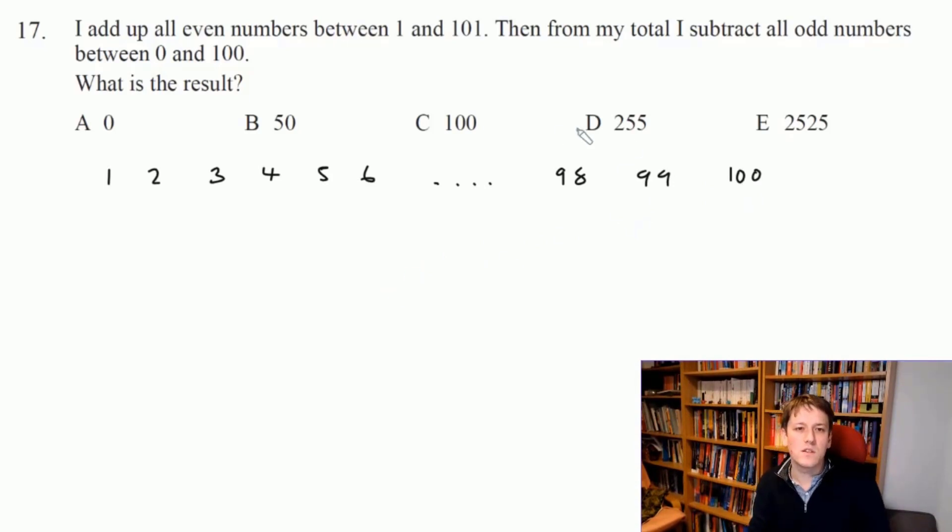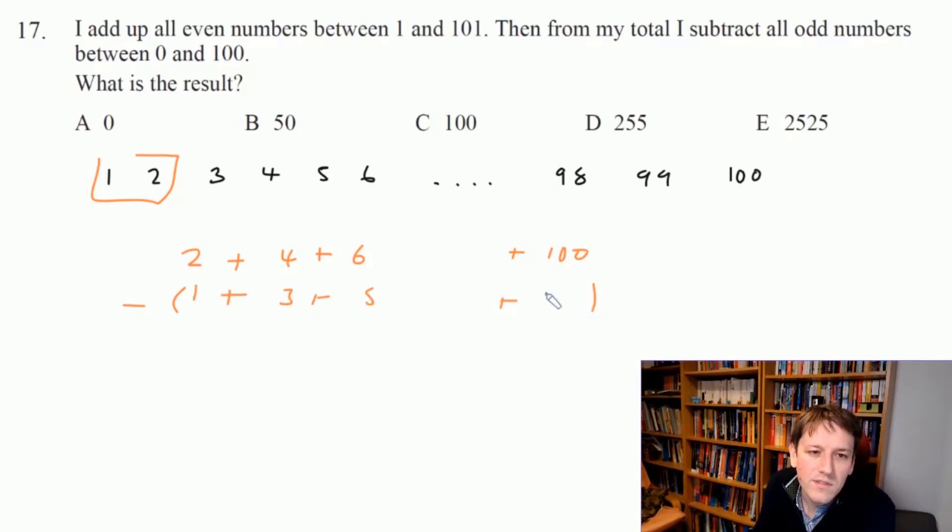So I'm going to look at the odd numbers, but they're going to be subtracted from the even numbers. So if I look at them in pairs in the total, I'm going to be doing like 2 plus 4 plus 6, but then I'm going to be doing minus 1 plus 3 plus 5. It's going to be 2 plus 4 plus 6, all the way up to 100. But then I'm going to subtract 1 plus 3 plus 5, all the way up to 99.